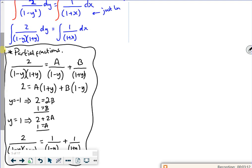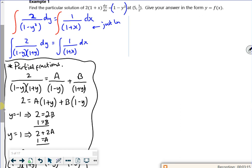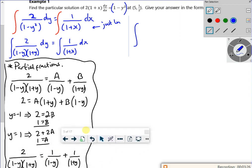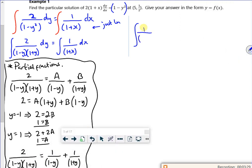So what I'm really saying then, is that left hand integral is actually 1 over 1 minus y plus 1 over 1 plus y dy equals the integral of 1 over 1 plus x dx. Right then, let's think about what I've got and what I've got along.